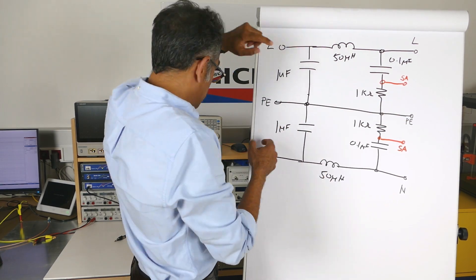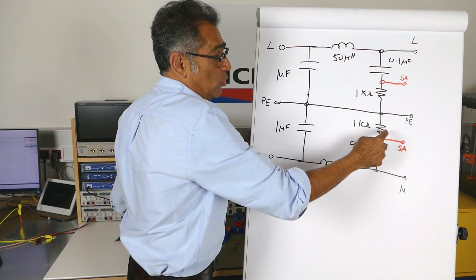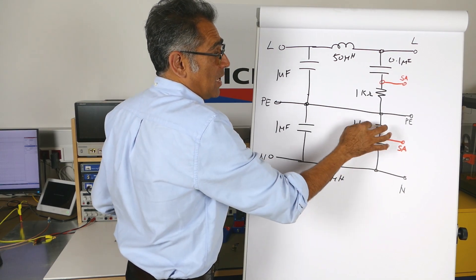You've got 50 microhenries, 50 microhenries, 0.1, 0.1 and 1k, 1k.